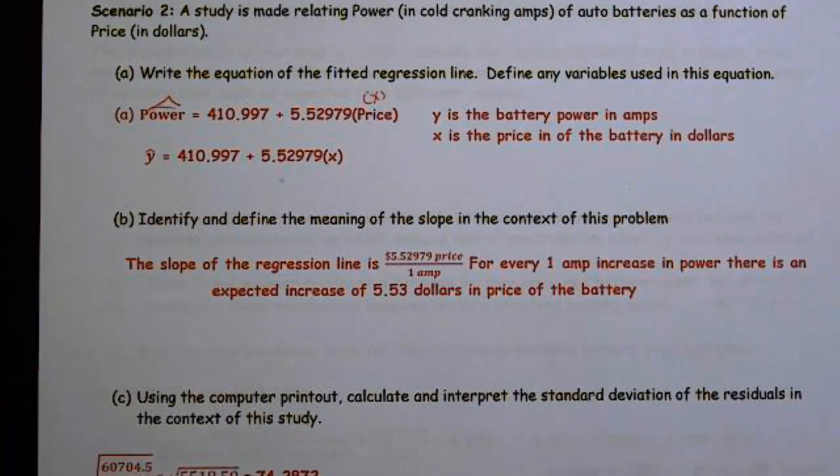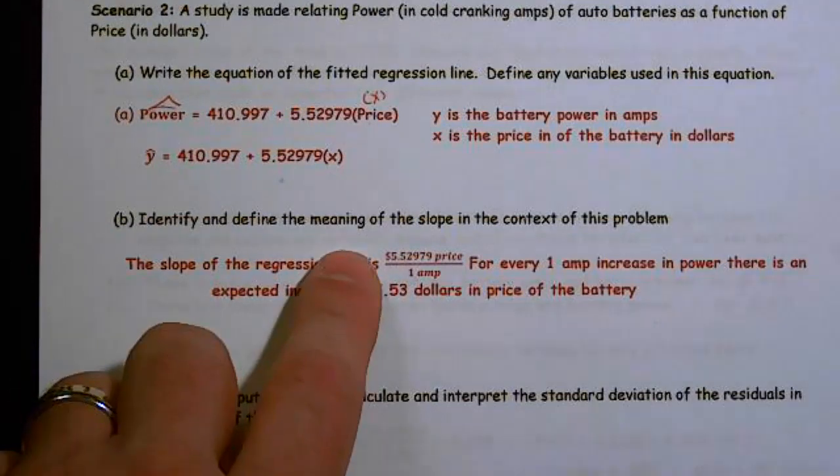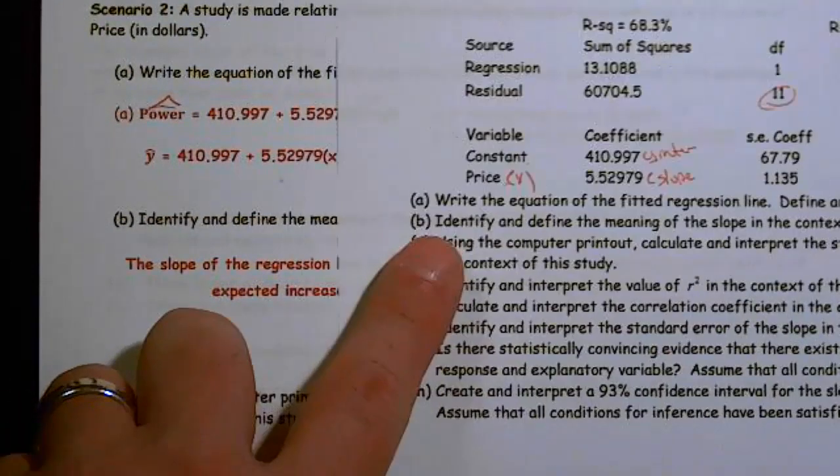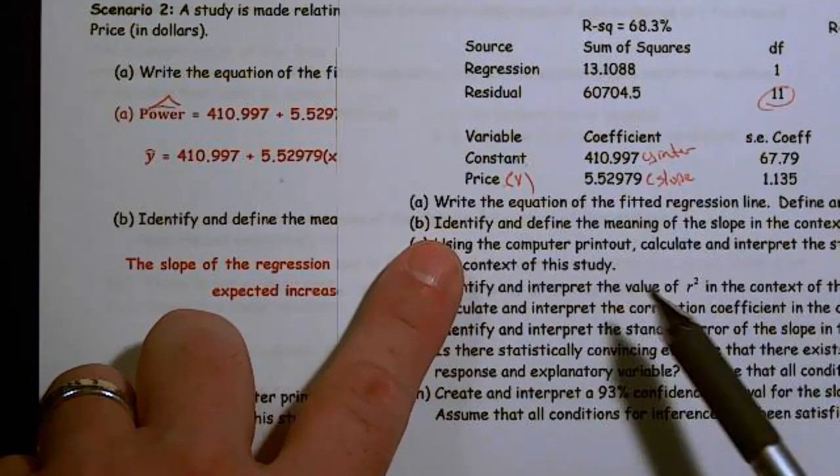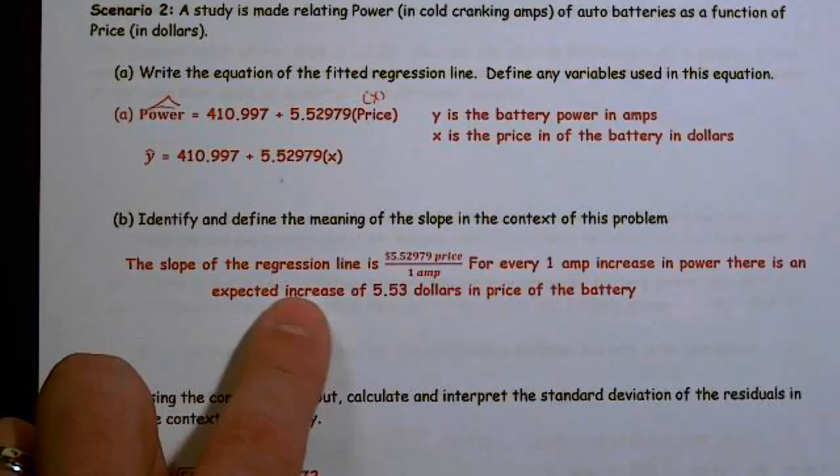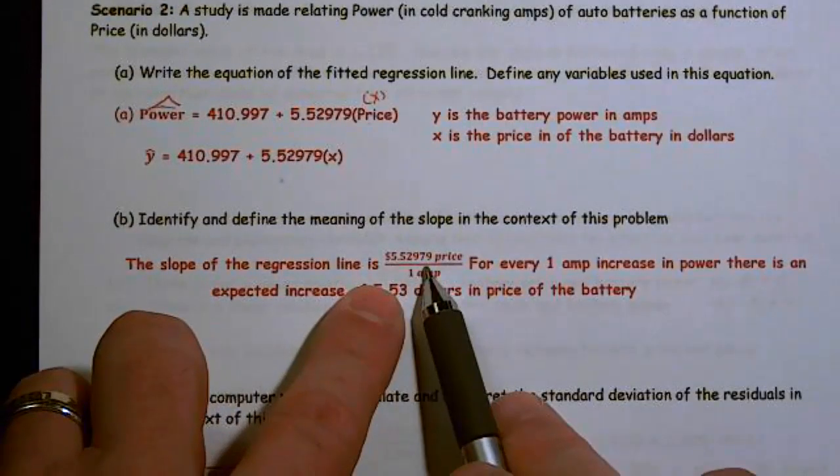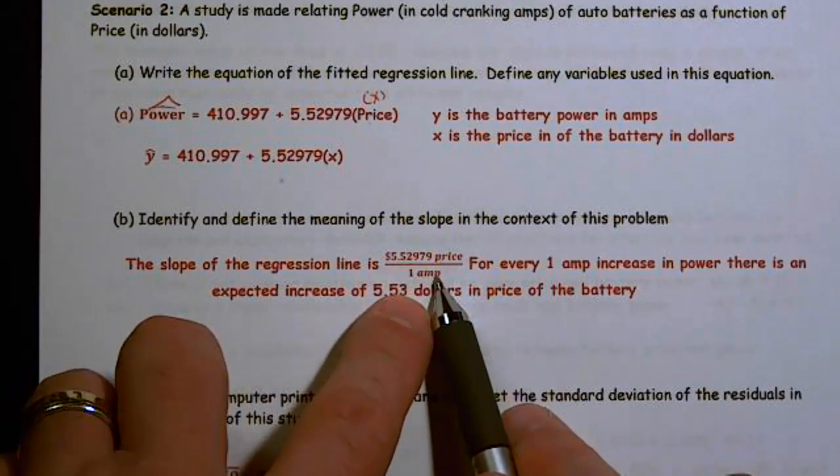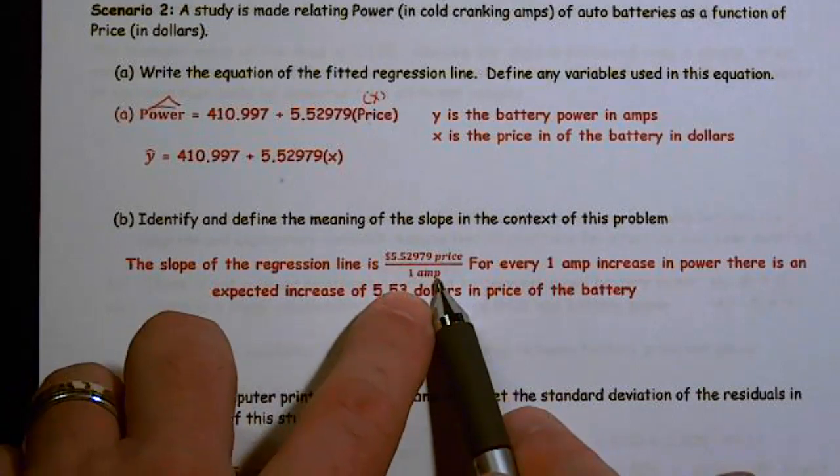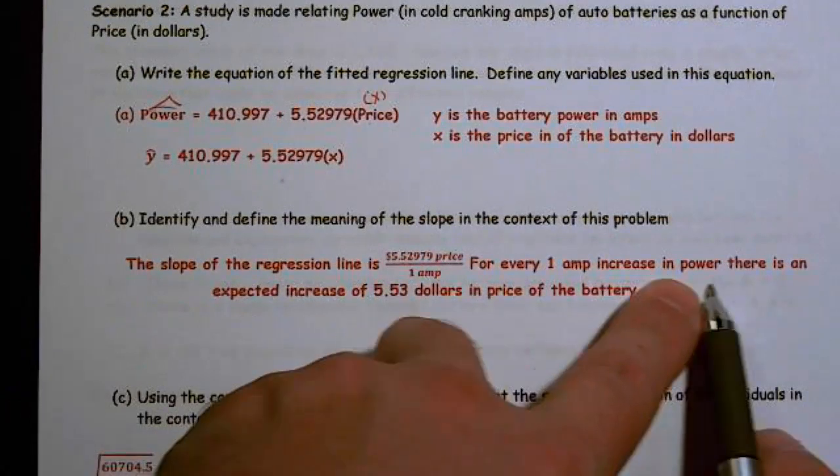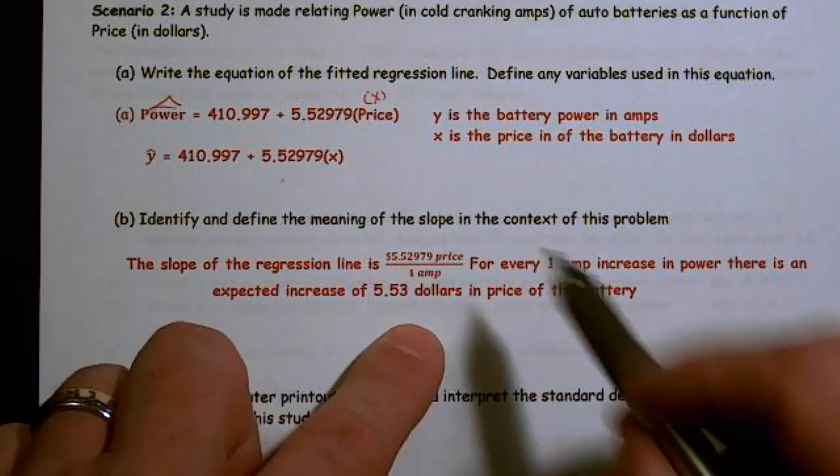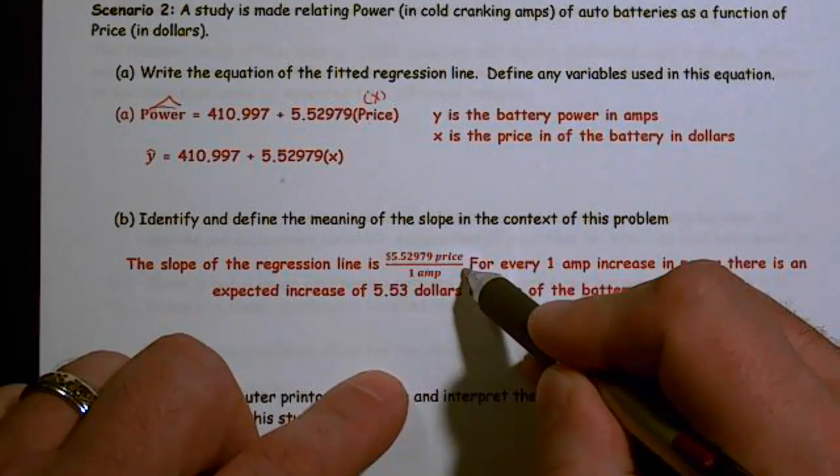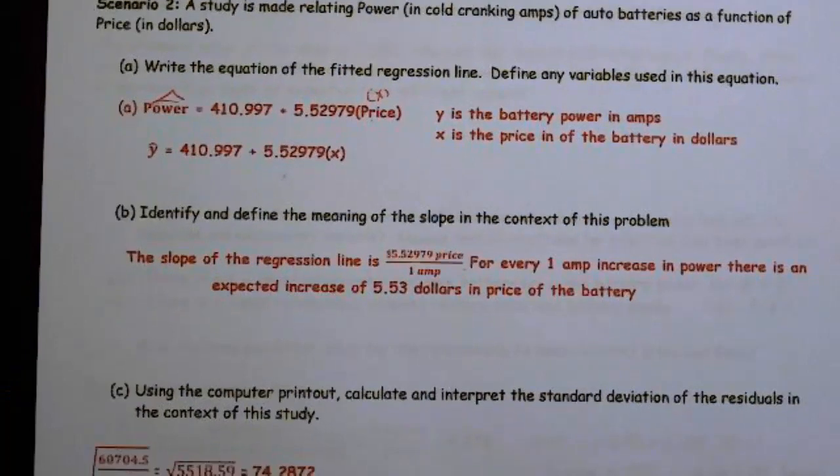The next thing says identify and define the meaning of the slope. And by the way, those values, I should say, came right here, 410 and 5.5. Well, this is my slope. And we identified it. The slope of the regression line is $5.5 for one amp. So for every one amp increase in power, there is an expected increase of $5.53 in price of the battery. Please write the fraction and label it before you define it. It will help you immensely.